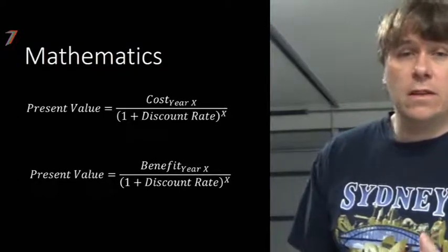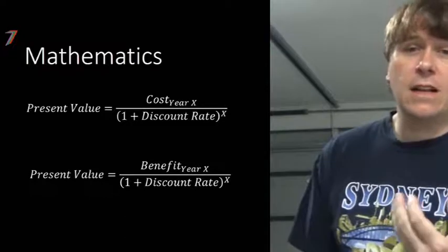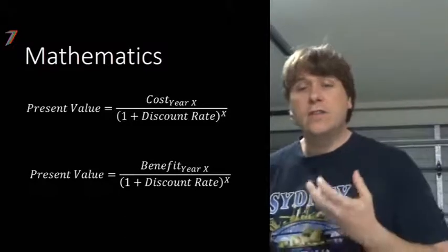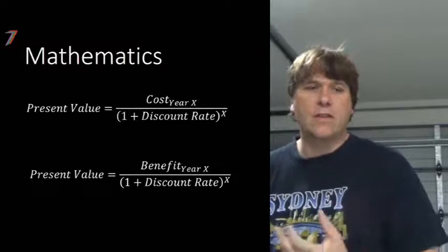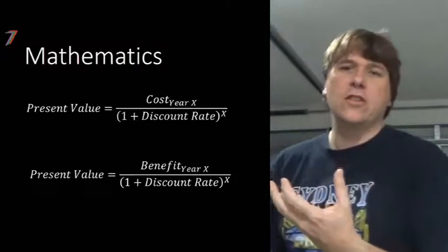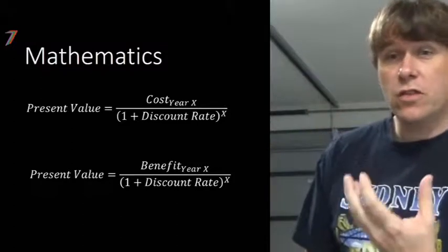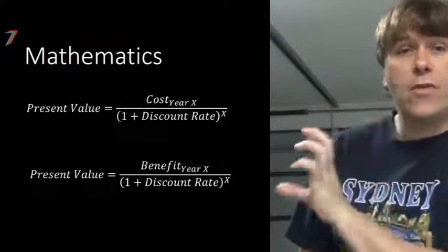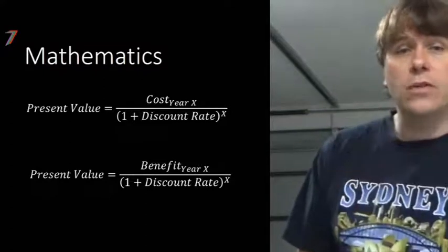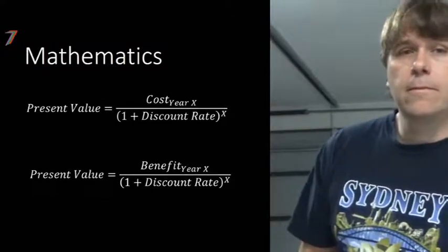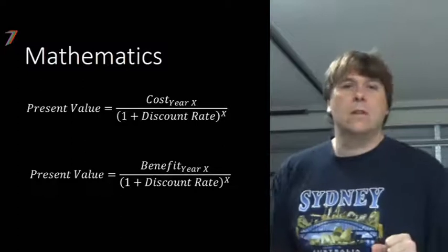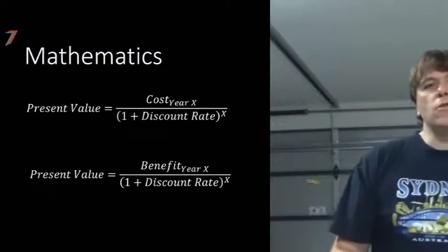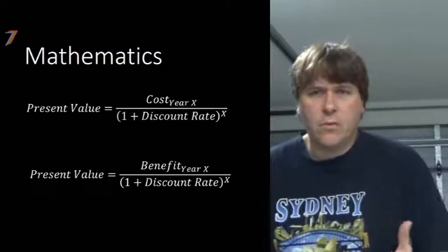You do the same calculation for benefits as well — exactly the same. Then you use these to calculate your net present value: you take a summation of all your benefits and all your costs for every single year, add them all up, and that gives you your net present value.